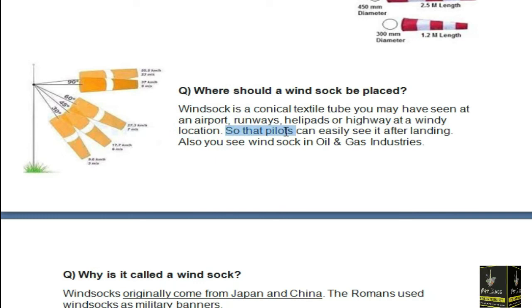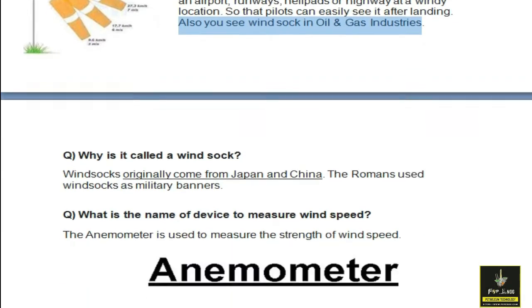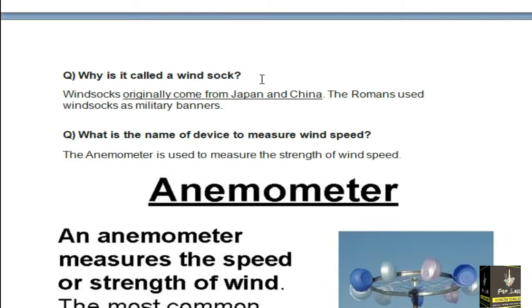The windsock is installed in the airport so the pilots can easily see it after landing. Also, you can see windsock in oil and gas industry mostly. Why is it called a windsock? Windsock originally comes from Japan and China. The Romans used windsock as military banners.